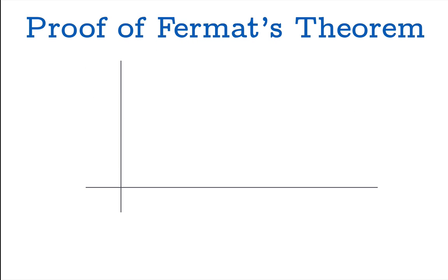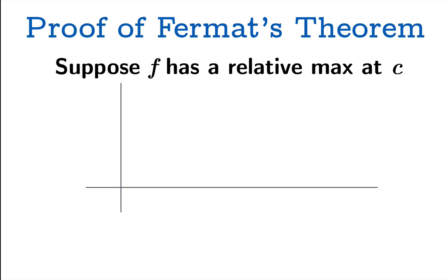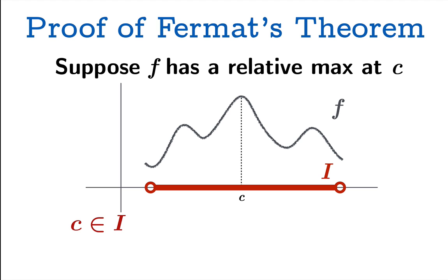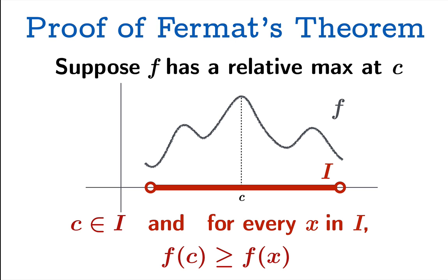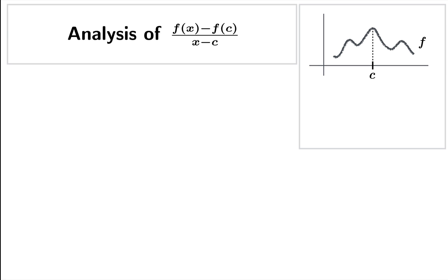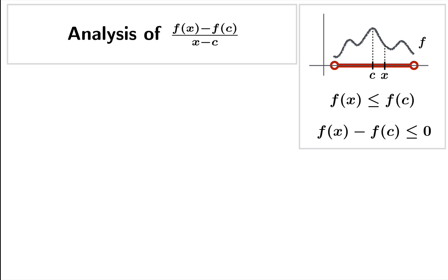What does a proof of Fermat's theorem look like? Suppose f has a relative max at argument c. We'll draw a graph with a relative max at c, build our open sampling interval, and notice that c is in the interval. For every x in the interval i, f(c) is greater than or equal to f(x). We want to analyze the secant slope — f(x) minus f(c) over x minus c — for a couple of different cases. No matter what x we choose inside the sampling interval, f(x) is less than or equal to f(c), so f(x) minus f(c) is less than or equal to zero.